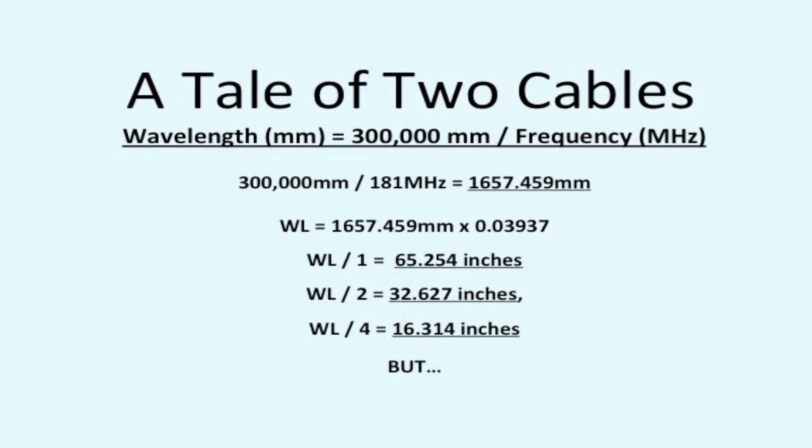To calculate wavelength in millimeters take 300,000 millimeters and divide by the frequency in megahertz. And when you divide 300,000 by 181 megahertz you get 1657.459 millimeters. Of course we're more conveniently doing things in inches so multiply the answer by 0.03937 to get inches.